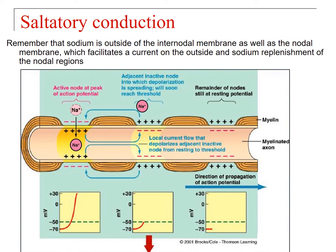There's a current on the outside and sodium replenishment of the nodal region. When sodium rushes in at one node, the sodium to replace it comes from the surrounding area — it flows over to be in position to move in when the next action potential arrives, then diffuses in the opposite direction and gets pushed back out by leak channels. This constant current helps speed up the action potential as it moves down the myelinated axon.